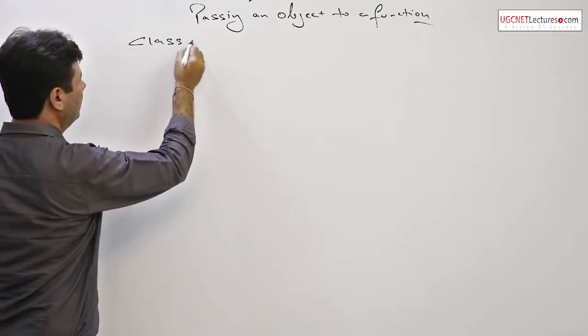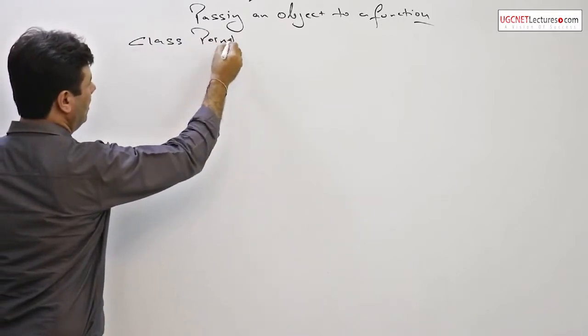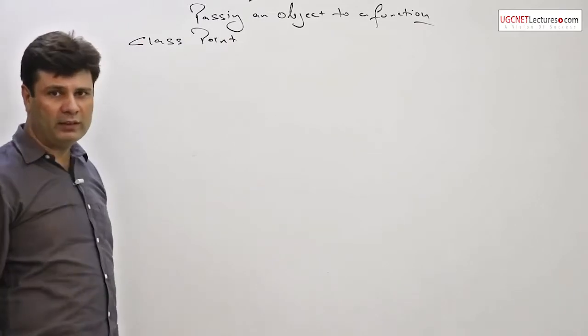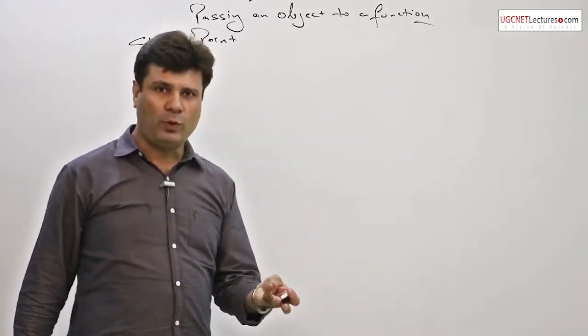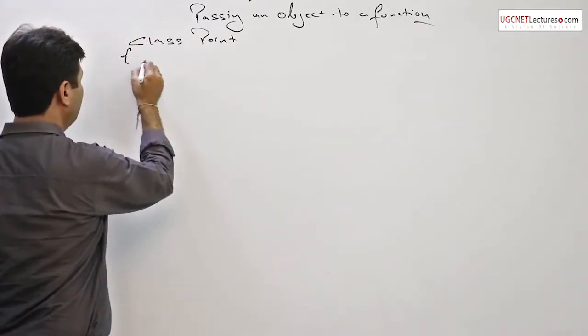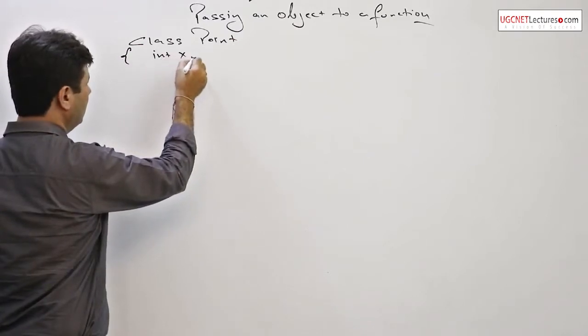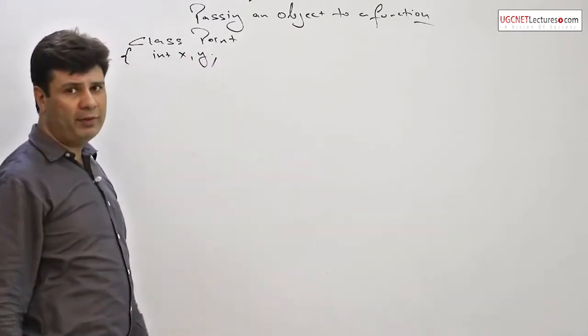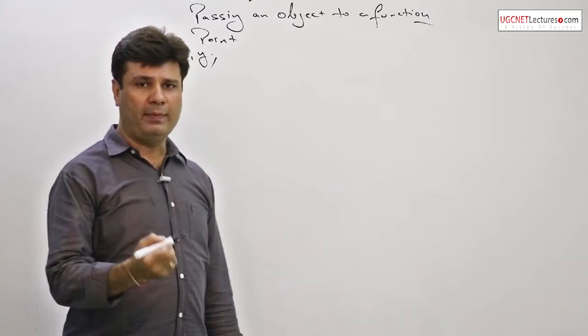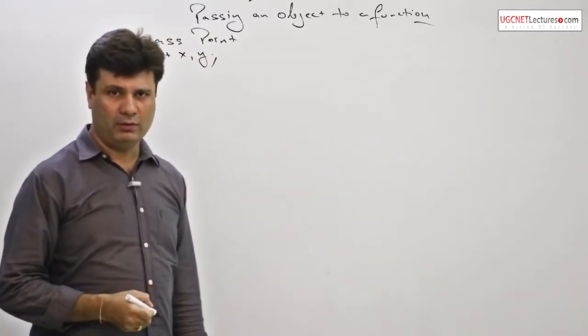So this time class point will be having both things: int x y as the data member, and the member functions get xy, sum xy, and show xy will be the member functions now.